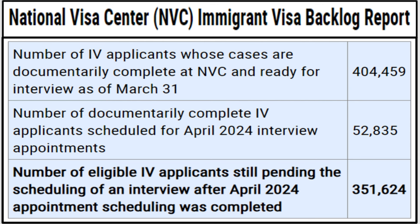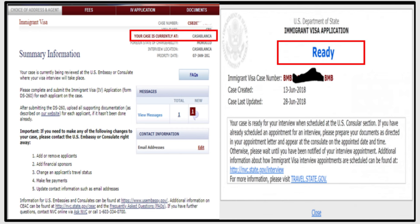They also documentally qualified 404,459 cases — that is a lot. As you know, the more documentally qualified cases there are, the more it increases the backlog. The backlog is now 351,624, which has gone back to pandemic-era levels — that is not good. In your NVC account you will see your country of interview, and the visa status check will show 'ready.'